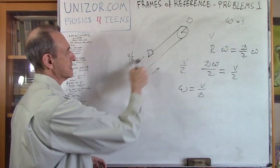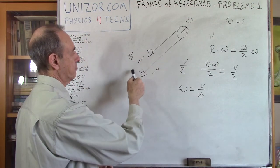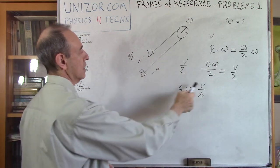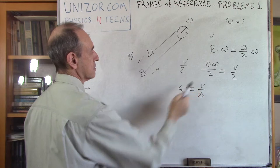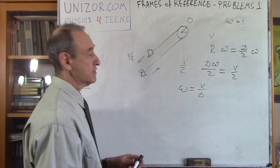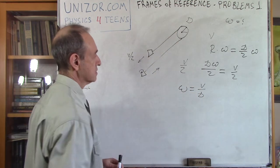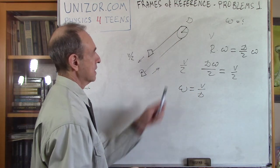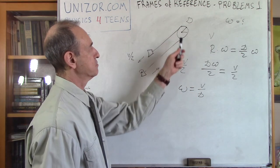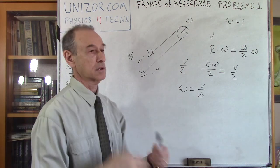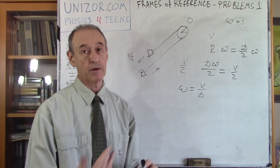So if you have one car passing the passenger with relative speed V and the wheel's diameter is D, then the angular speed of the wheel is omega equals V over D radians per second.